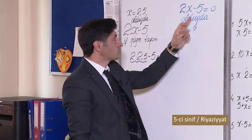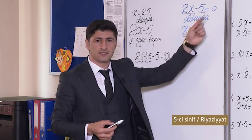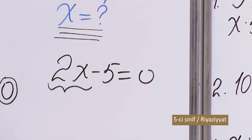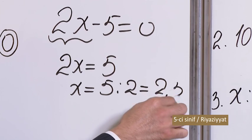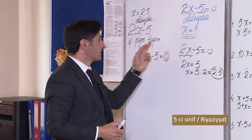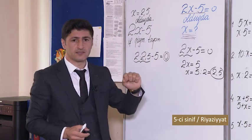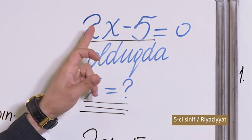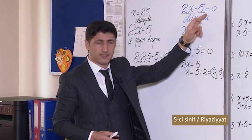Bu misalda isə 2x − 5 = 0 olduqda x-in qiymətini tapın. Bu o deməkdir ki, x-in yerinə elə bir ədəd yazmalıyıq ki, 2x − 5 ifadəsinin ədədi qiyməti 0 olsun. 2x − 5 = 0-dan məlumdur ki, 5-dən 5 çıxdıqda 0 qalır, yəni 2x = 5, x = 2,5. Dəyişəni olan bərabərliyə tənlik deyilir.